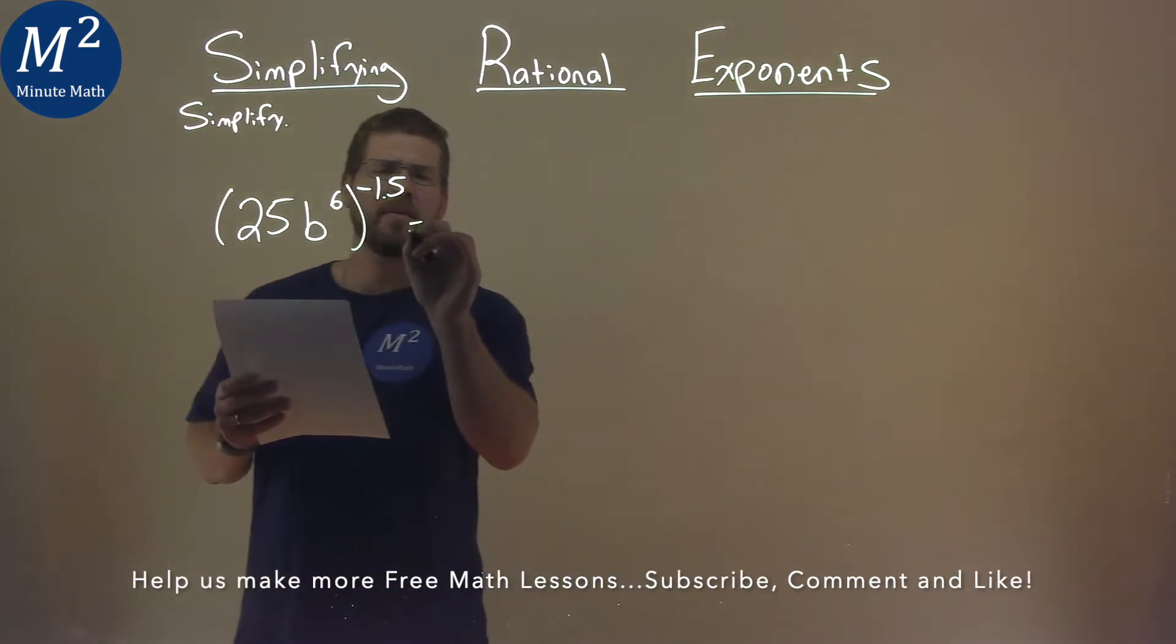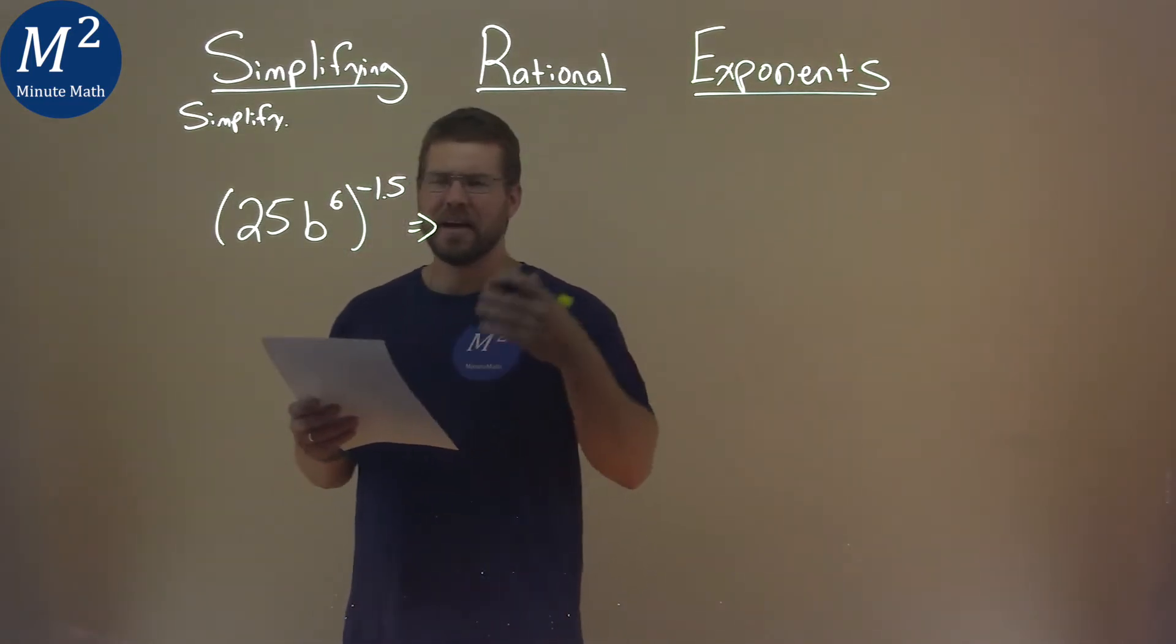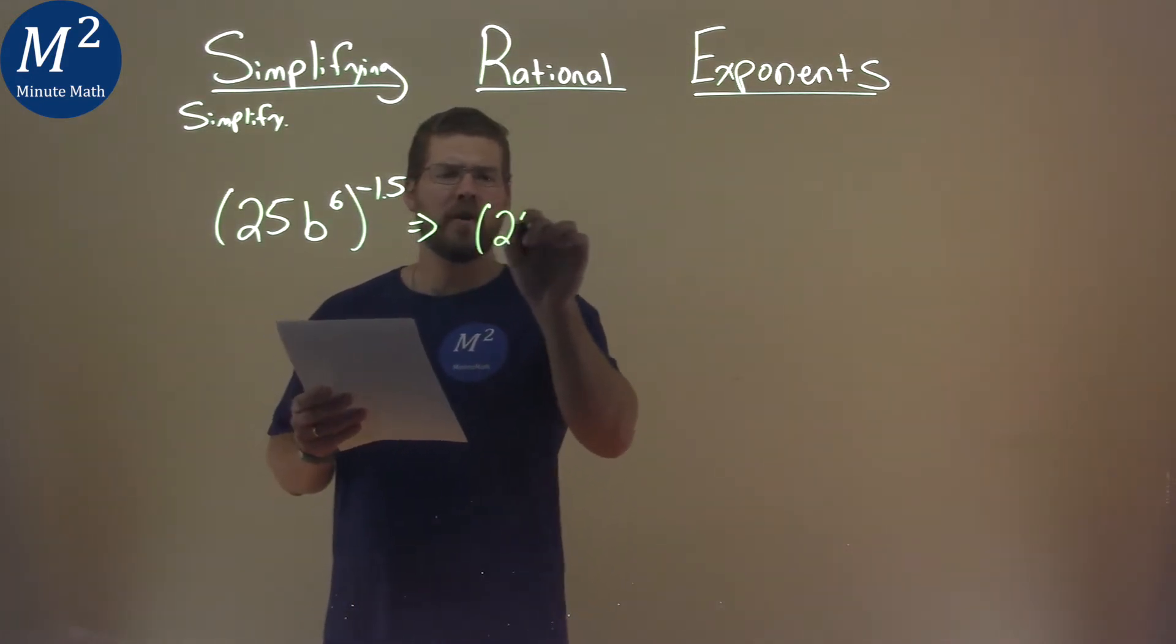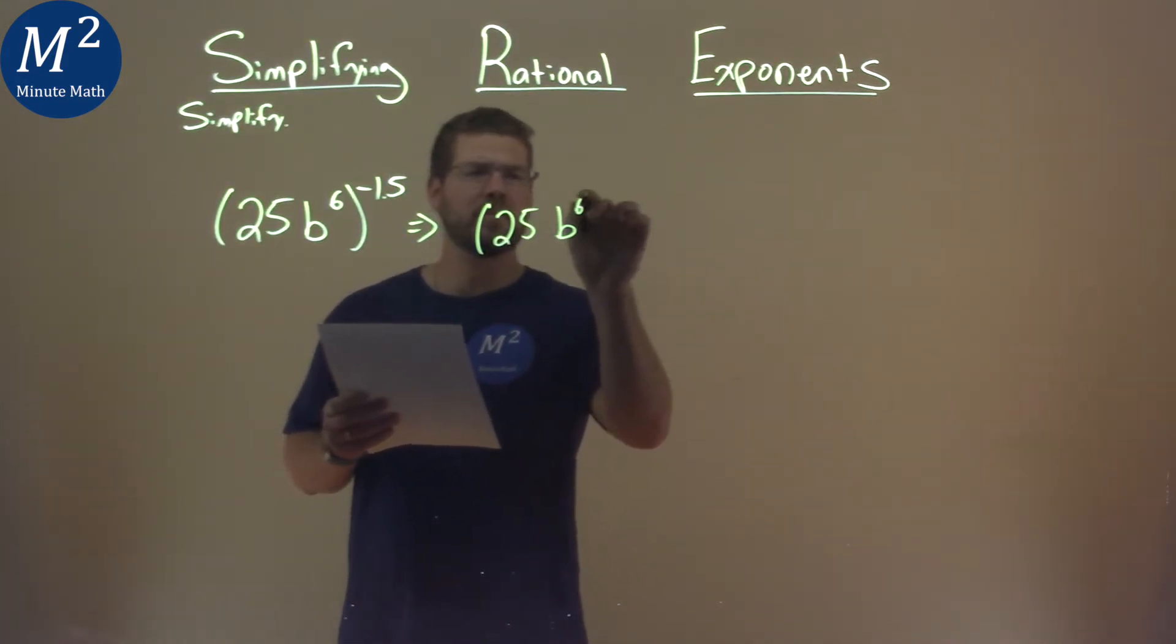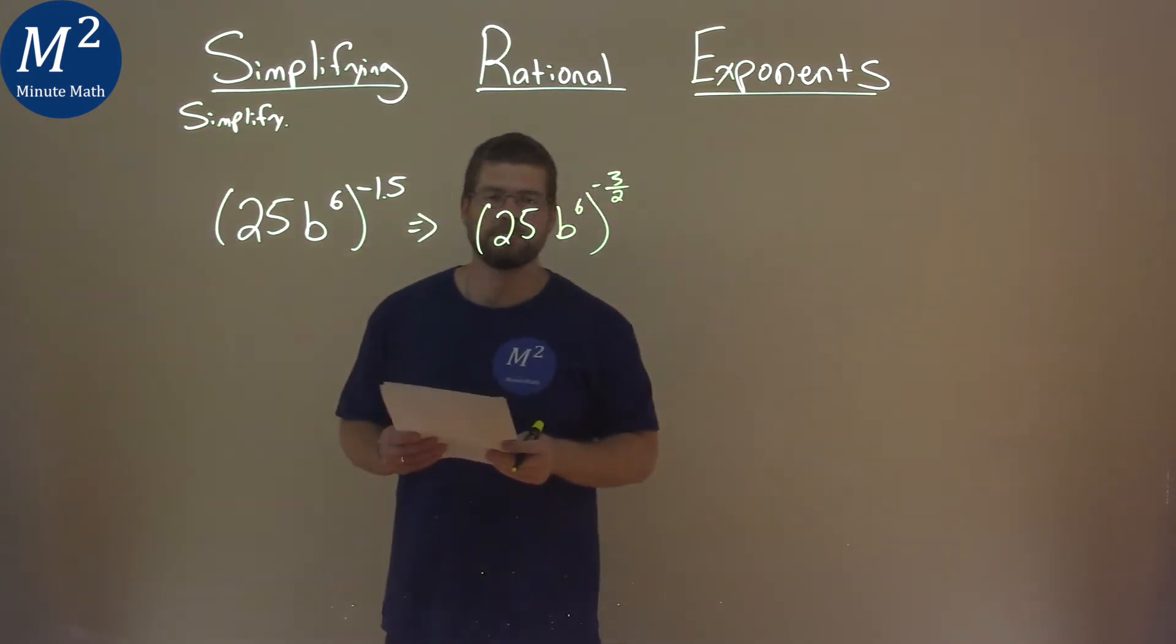Let's write this instead of a negative 1.5 power, but to a negative 3 halves. I kind of like dealing with fractions here. So we have 25b to the 6th, all to the negative 3 halves power.